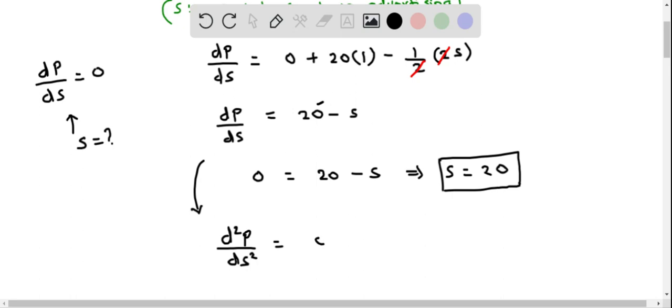The derivative of 20 is 0, and the derivative of minus S is 1. So this is negative 1, which is less than 0. And this will be less than 0 for all values of S, as it is independent of S.